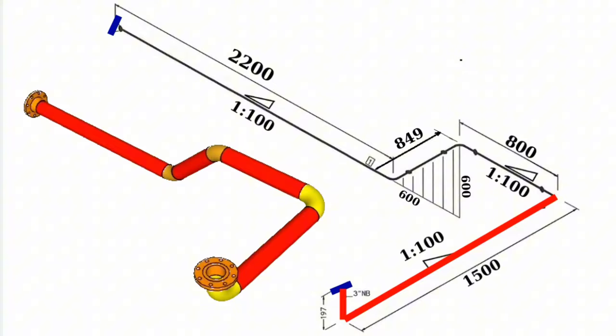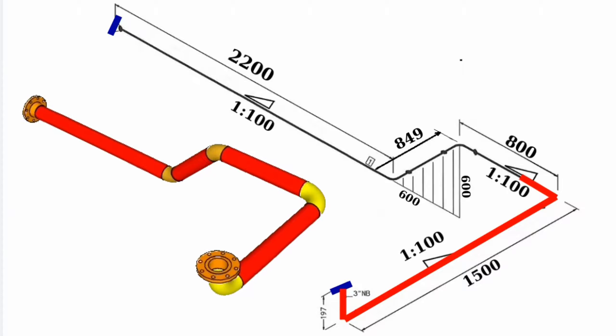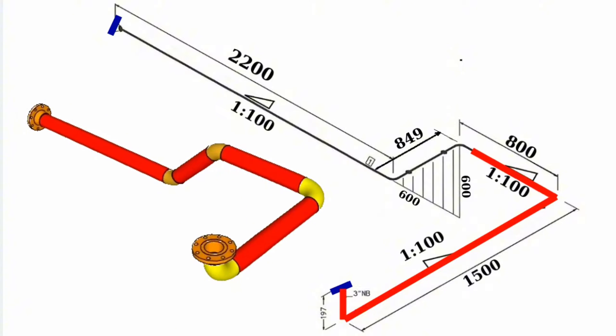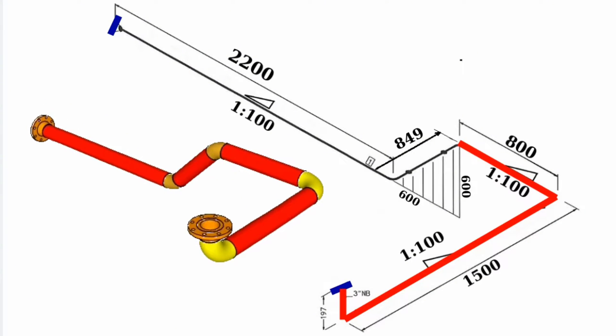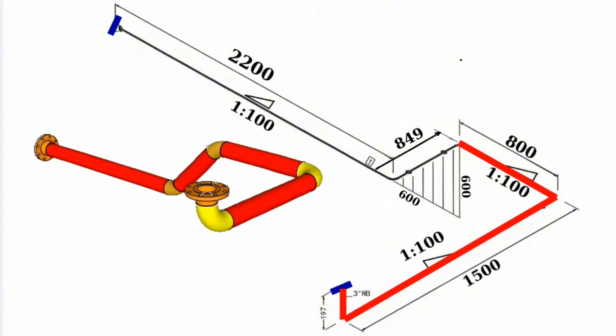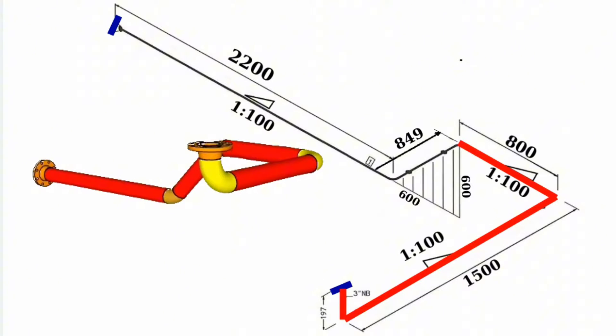Then pipeline turns northward with a 90 degree angle and a length of 800 millimeters. In this point, the pipeline turns to downwards with a 45 degree elbow and a length of 849 millimeters.